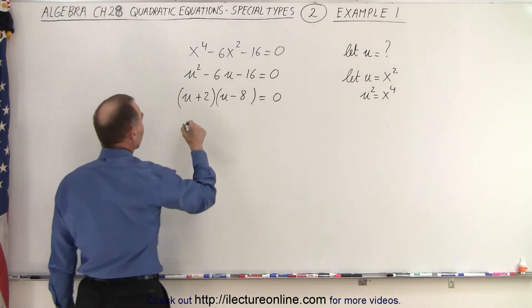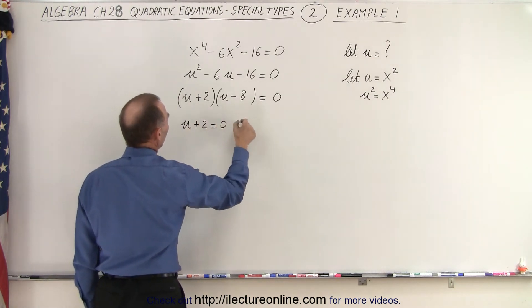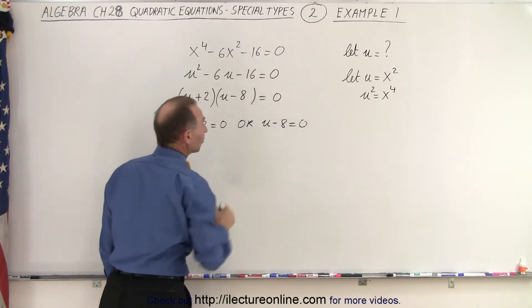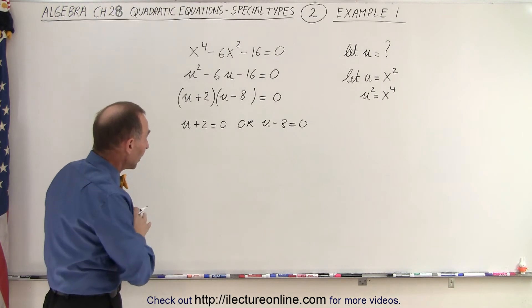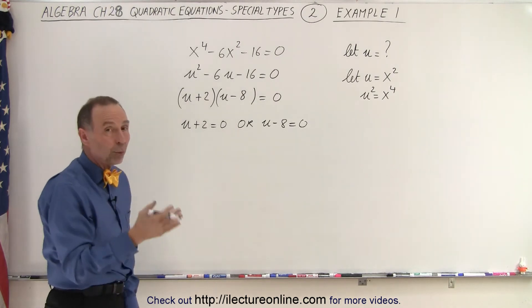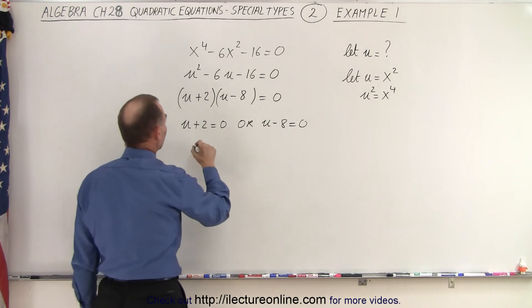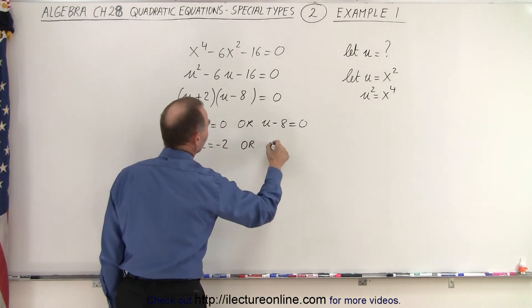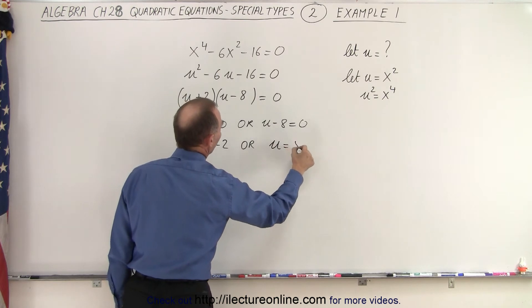we can conclude that u plus 2 equals 0 or u minus 8 equals 0. We can say so because when we multiply and we get a 0, that means either one or the other must be 0. In this case, we see that u equals negative 2 or in this case, we see that u is equal to a positive 8.